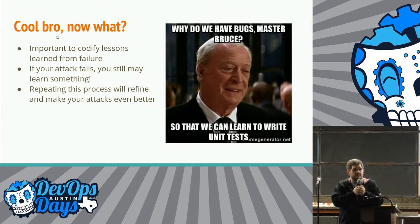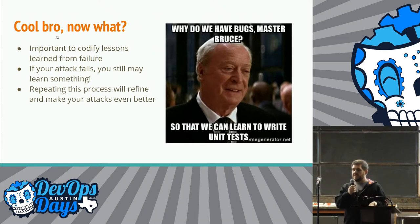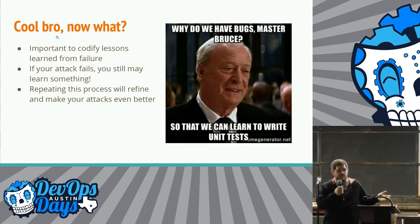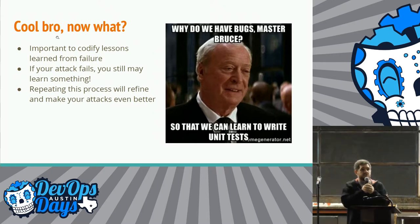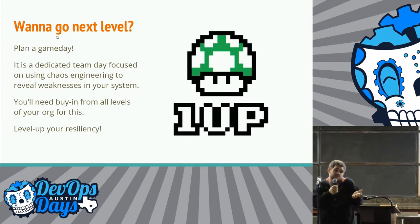It's important to codify your lessons learned from your failures. So if you run these experiments, you should write them down and talk about them — tell them to the rest of your people. If your attack fails, you still may learn something, like why it didn't work, or that Kubernetes actually is resilient when you attack it.